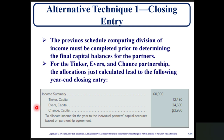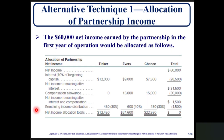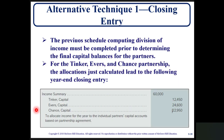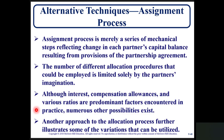Closing entries: once the schedule computing divisions of income is completed, it determines the final capital balances for the partners. For the Tinker, Evers, and Chance partnership, the closing entry debits income summary for $60,000, credits Tinker Capital for $12,450, credits Evers Capital for $24,600, and credits Chance Capital for $22,950, to allocate income for the year to individual partners' capital accounts based on the partnership agreement and the income allocation schedule.